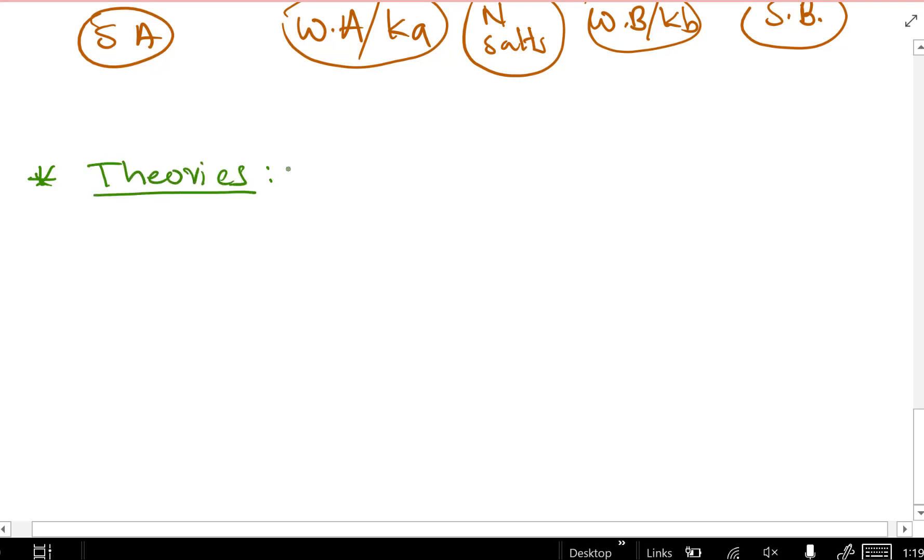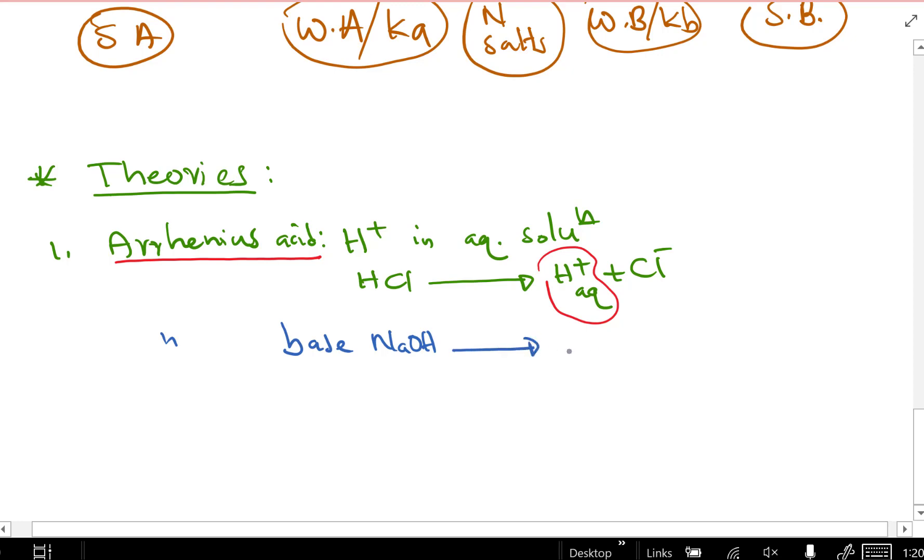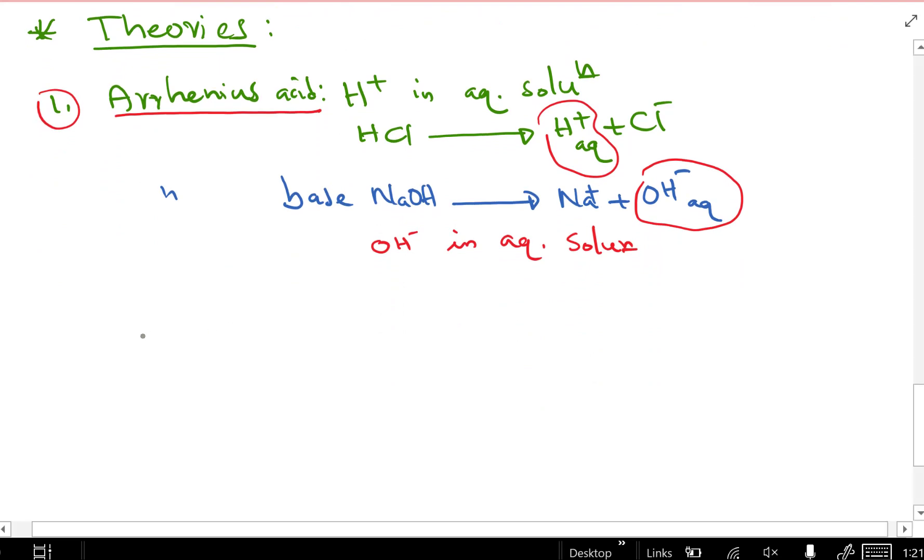Let's look at some theories. The first theory is Arrhenius. He first started labeling these aqueous solutions as acids and bases. If the aqueous solution releases protons, the H plus, in the water, that's called the Arrhenius acid. HCl gives you H plus in the water, aqueous. That's why it's Arrhenius acid. Arrhenius base will be releasing an OH minus. Sodium hydroxide will break into sodium plus and OH minus. The chloride minus and the sodium plus are spectator ions. The OH minus is in the aqueous solution. That's how the Arrhenius acids and bases.